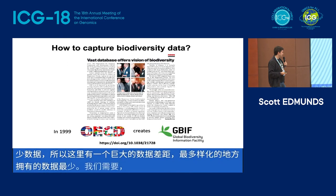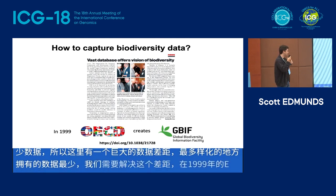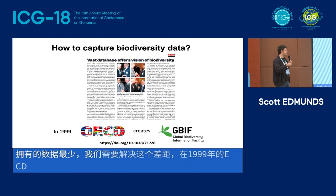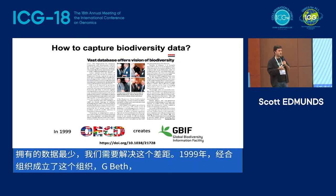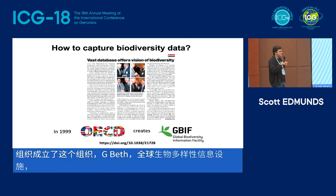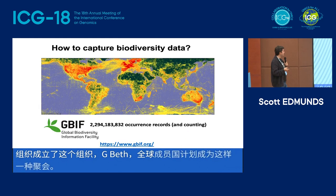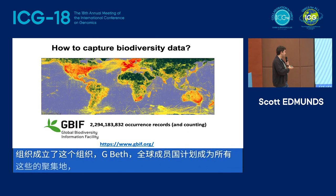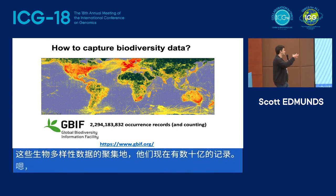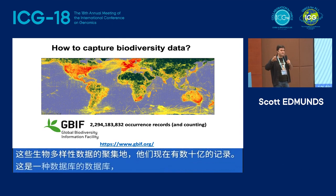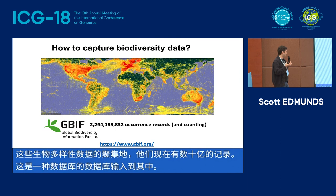In 1999, the OECD created GBIF — the Global Biodiversity Information Facility — based in Copenhagen, with member states across the world, planned to be the gathering place for all this biodiversity data. They now have literally billions of records. It's a sort of database of databases — databases feed into it, and they have a one-stop portal for all of the world's biodiversity information.